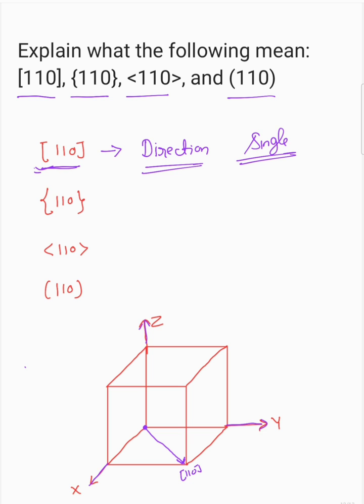And when we are talking about this curly bracket, it means family of planes - it's a family of planes, 110 family of planes. And when you have an angle bracket, this will be the family of directions.